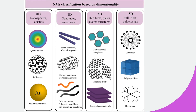Moving on towards 2D nanoparticles, 2D nanomaterials are those that have two dimensions out of the nanometer range. These two dimensions may be the x-y dimension, the y-z dimension, or the z-x dimension. The third dimension remains in the nanometer range. For example, looking at this nanomaterial here, the x dimension and y dimension are labeled.